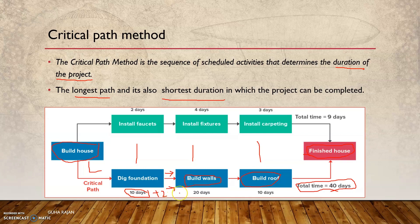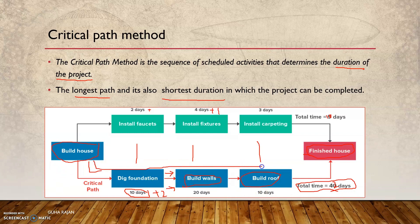If there is a delay of two days, you can start build walls only on the 13th day, which means instead of 40 days, this project is going to take 42 days. Whereas even if install faucets or install fixtures takes one extra day, it doesn't really matter — it doesn't impact the schedule of the project, because that activity can still be fitted within the schedule. So as per the plan, this is what is called the critical path — 10 days, 20 days, 40 days in total. All three activities — dig foundation, build walls, and build roof — are on the critical path, and you cannot delay any of these activities.